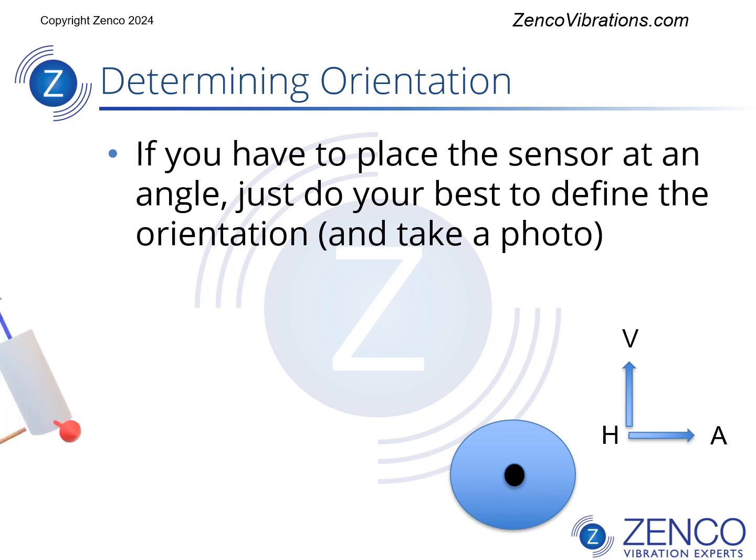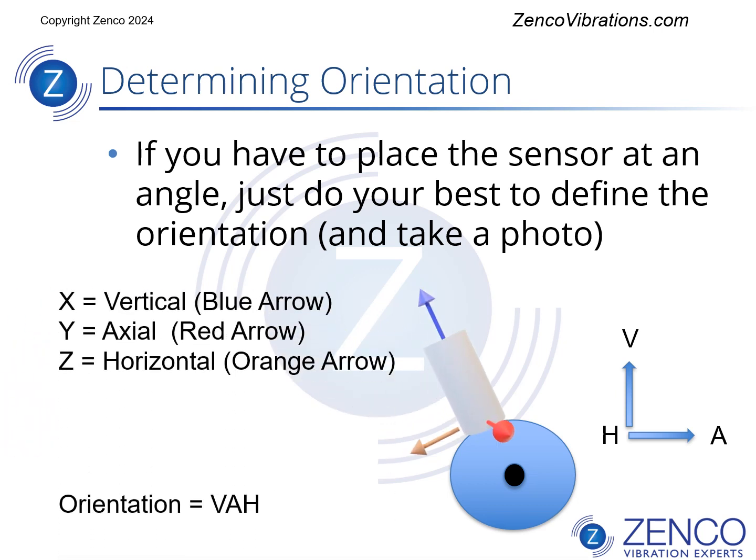Now if you have to place a sensor at an angle, just do your best to define the orientation, and perhaps take a photo or draw a picture showing how the sensor is oriented. In this case, even though we're not pointing directly vertically with the X blue arrow, we could still call X vertical, Y axial, and Z horizontal. If it was tilted a little bit more to the side, we could call X horizontal and Z vertical. The more important thing is to make sure that we get the axial one correct.